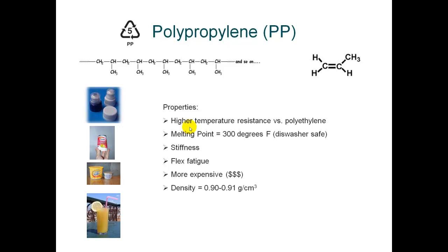Milk-containing products like butter and yogurt containers are usually made from polypropylene. The reason these products use polypropylene instead of polyethylene is that in the manufacturing process, the temperature has to be raised quite a bit in order to sterilize these products, and polyethylene — high density or low density — would warp at those temperatures. So polypropylene is typically used.